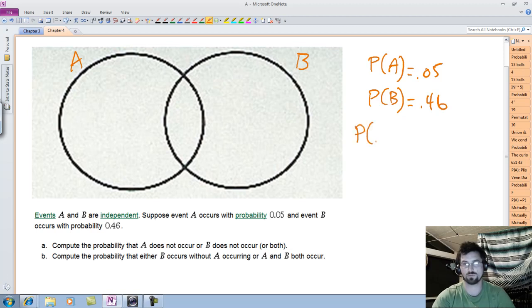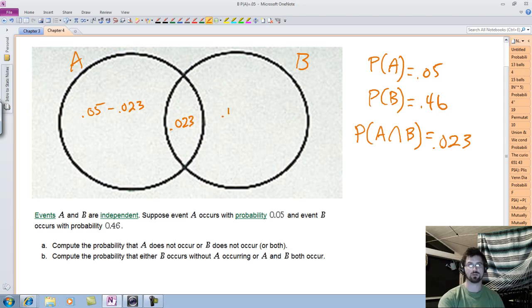And without any trouble, we can quickly compute intersection, which would be... what's that going to be? Add a 0, cut it in half, 20. But I got to put .023 I think. Okay, anyways, so that's our intersection. And you can subtract if you want to figure out the other parts. So this would be .05 minus .023. This is .023. This is .46 minus .023.